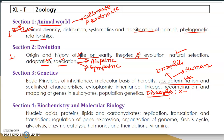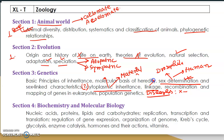Cytoplasmic inheritance is essentially maternal effect or maternal inheritance. You can also study snail coiling as an example of cytoplasmic inheritance, though a question may or may not come from that. Another topic is linkage — you may get one question from linkage.